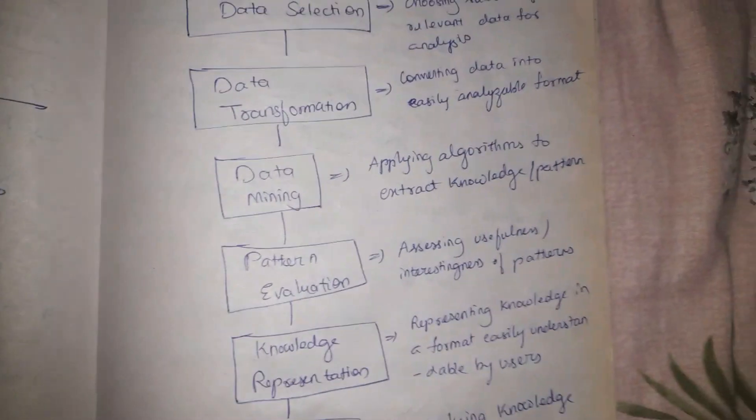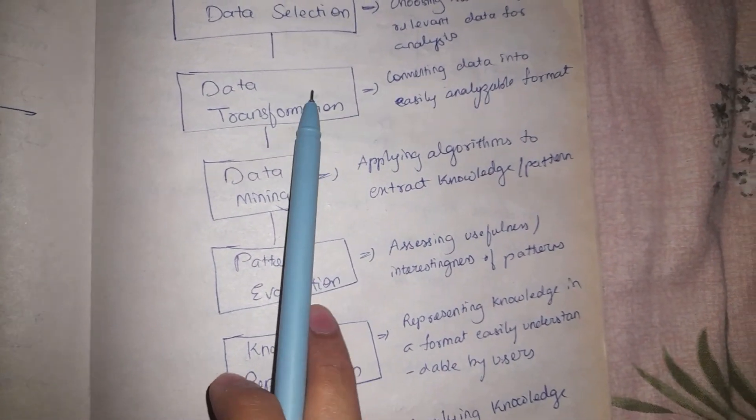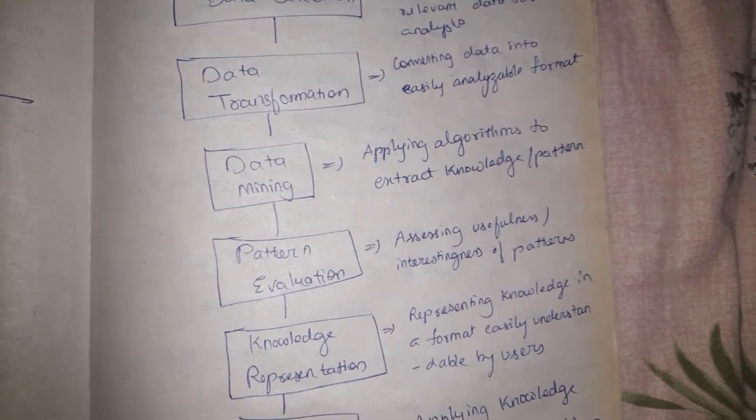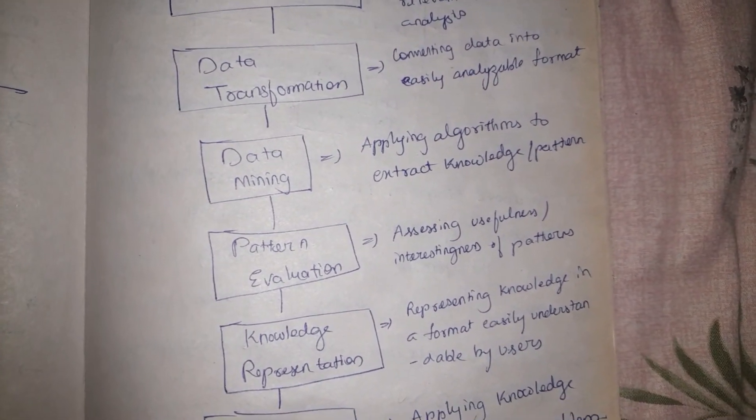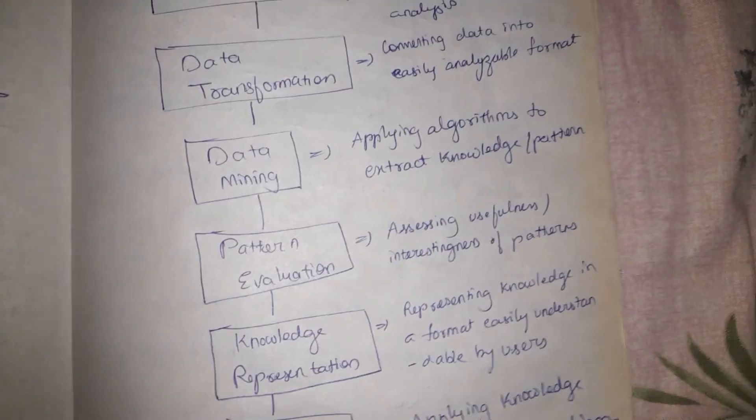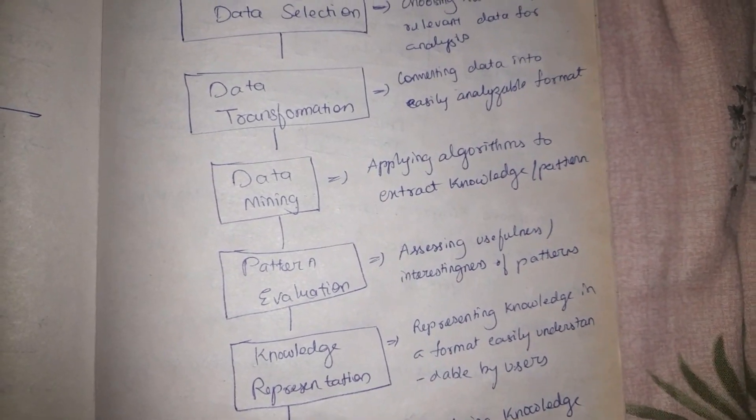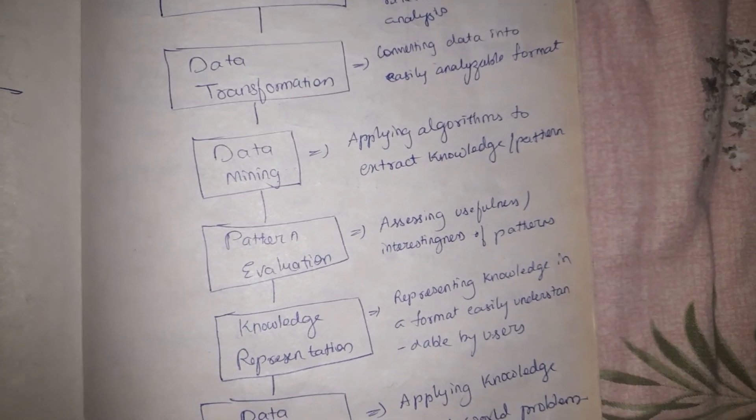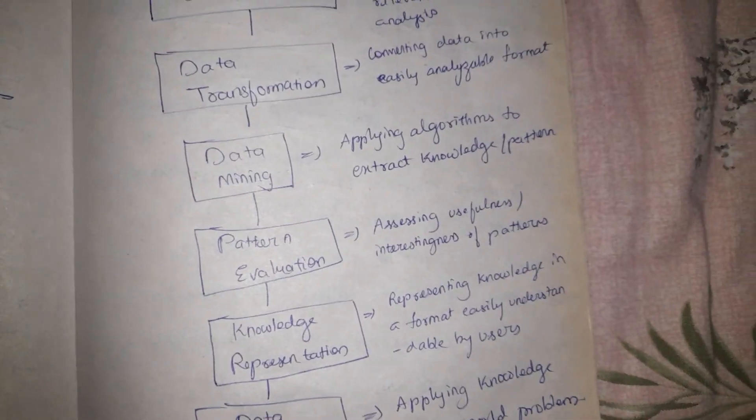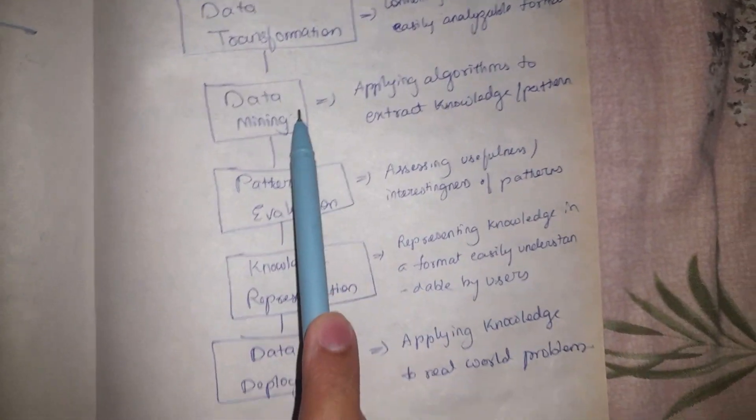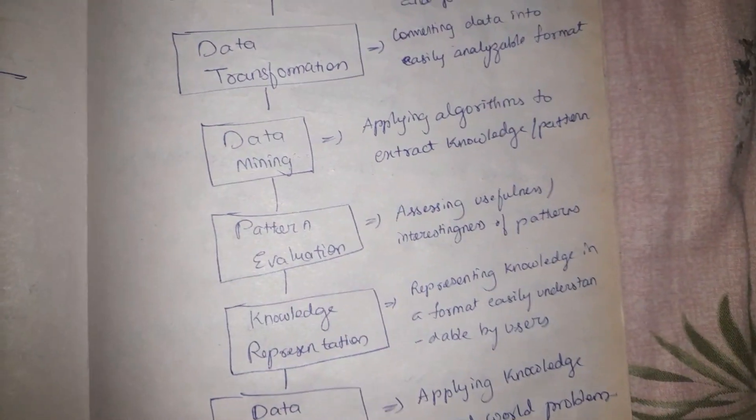After data transformation, the actual data mining process is performed, which means we have to apply algorithms. In this step, algorithms are applied to extract the pattern. The algorithms can be anything - clustering, classification, association rules, that kind of algorithms are applied. After the algorithm, they will generate patterns.